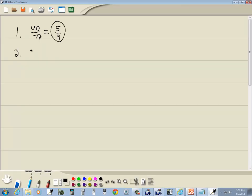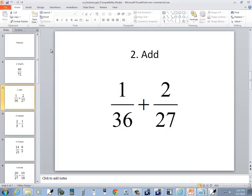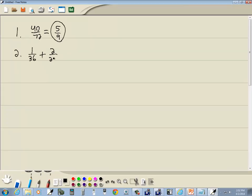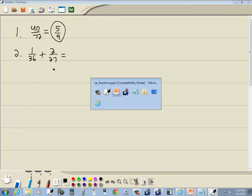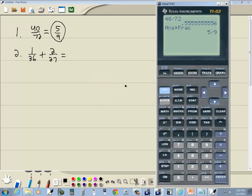Here we're going to add two fractions. So I've got 1 over 36 plus 2 over 27. I'm going to press clear to clear the screen. So I do 1 divided by 36 plus 2 divided by 27.